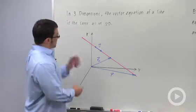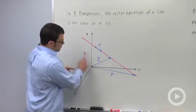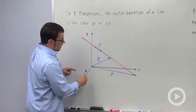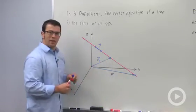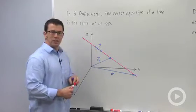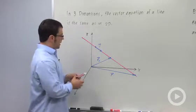In three dimensions the vector equation is the same as in 2D. Here's a picture of a line in 3D. All we need to know is the position vector of one point on the line and a direction vector that indicates the direction of the line.